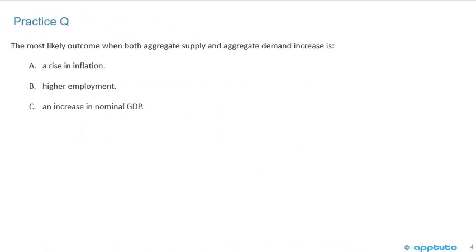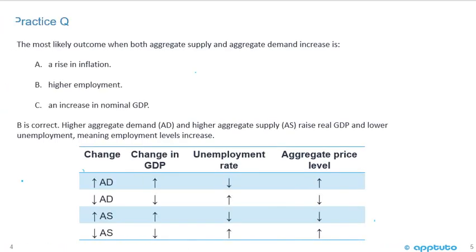Practice question: the most likely outcome when both aggregate supply and aggregate demand increase is A, a rise in inflation; B, higher employment; or C, an increase in nominal GDP. This is a tricky question because it's asking when both aggregate supply and aggregate demand increase. Looking at both rows, we can see the change in GDP is moving in the same direction — up — so that may lead you to answer C, which seems to be correct.